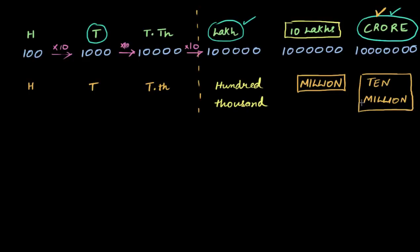Then what do we do about bigger numbers? In the international system there are more names — millions, and after that billions. A crore is an 8-digit number: 1 followed by 7 zeros. The next number, multiplied by 10, gives us a 9-digit number with 8 zeros — and what would we call this in the Indian system? We would call this 10 crores.